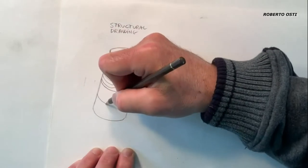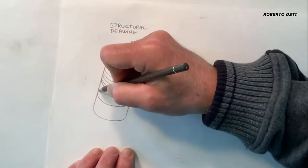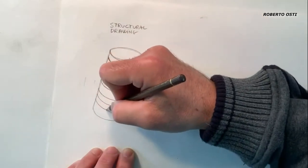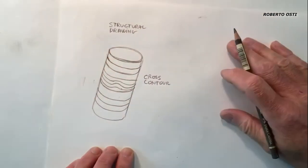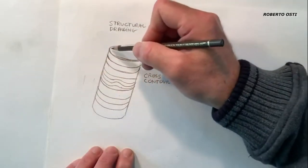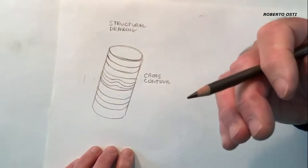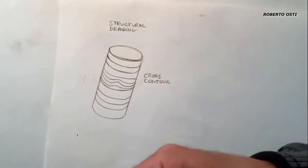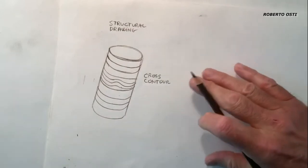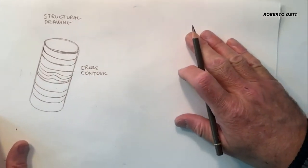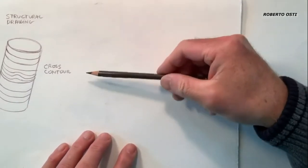So but this is the cross contour line, right? So now this cross contour line is kind of good for telling me the volume, the volumetric characteristic of the subject. But artistically speaking is kind of dry, right? So what I want to do, I want to find a way to render my cylinder in a more interesting way, right? So I'm going to redraw the cylinder, right?